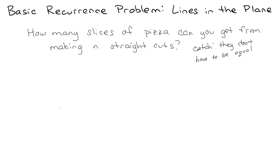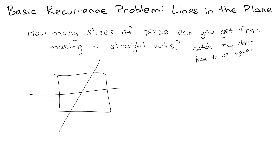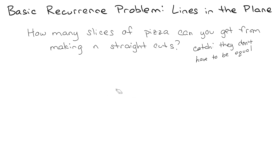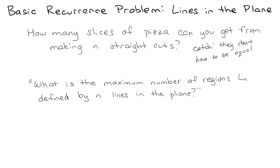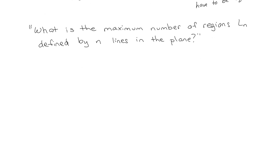With a square pizza, I can cut it once, twice, but on the third cut instead of going through the center I come through here and get an extra region — so instead of six slices I've got seven. The formal math question is: what is the maximum number of regions L(n) defined by n lines in the plane?